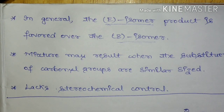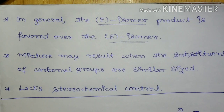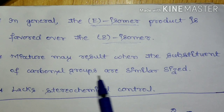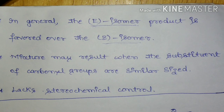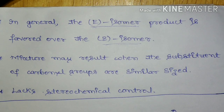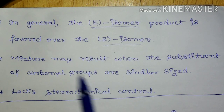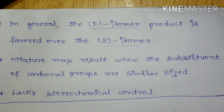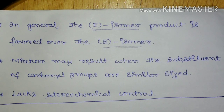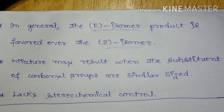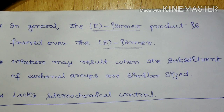Coming to the limitation, McMurray Coupling has a limitation: a mixture may result when the substituents of the carbonyl groups are similar in size. If the substituents are different in size, then the general rule that the E isomer is favored over the Z isomer holds. But if the substituents are similar in size, then we are going to get a mixture. That is the main drawback of McMurray Coupling. Additionally, McMurray Coupling lacks stereochemical control.